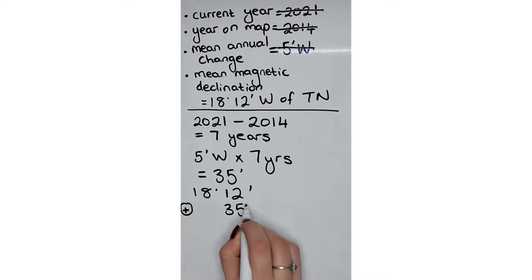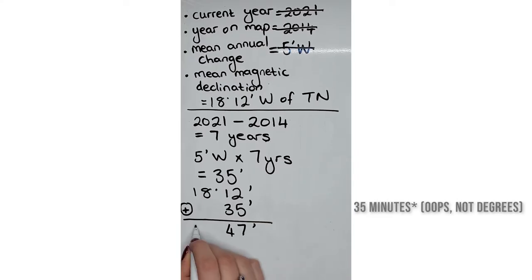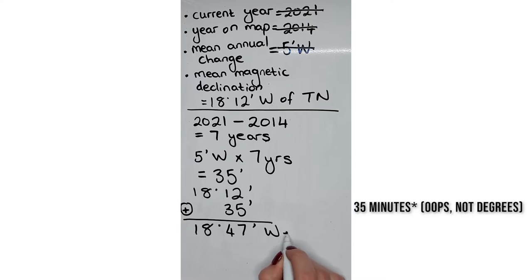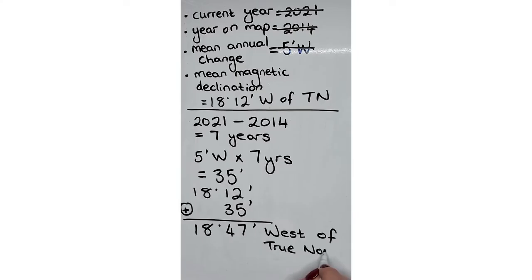This gives us 35 minutes. Our next step is to add our mean magnetic declination: 18 degrees and 12 minutes plus 35 minutes, giving us an answer of 18 degrees and 47 minutes west of true north. That was a fairly straightforward one and there were no conversions in that example.